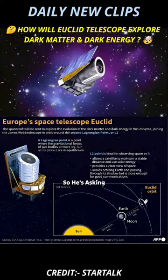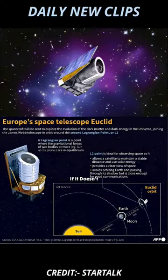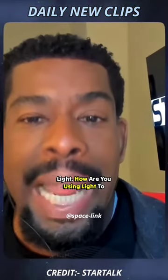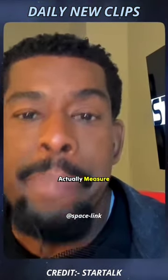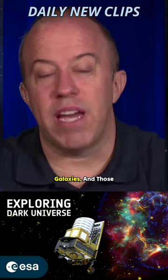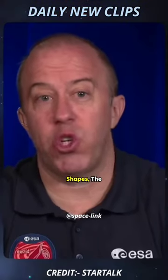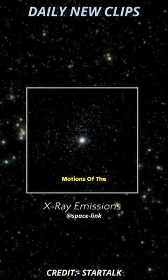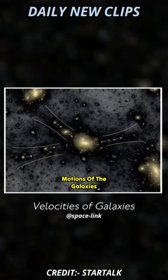He just learned that dark matter doesn't interact with light, so he's asking: if it doesn't interact with light, how are you using light to actually measure something? We're measuring the properties of galaxies, and those properties are the shapes, the distances, and the motions of the galaxies.